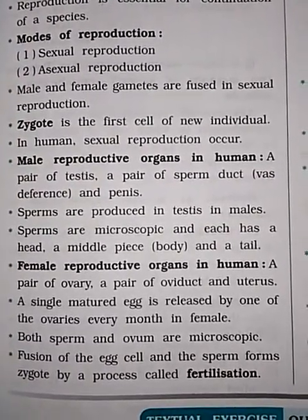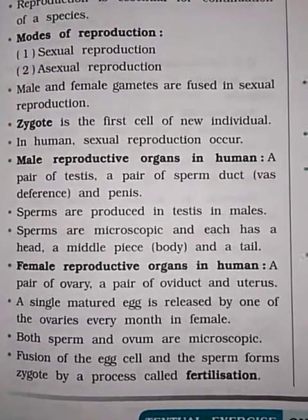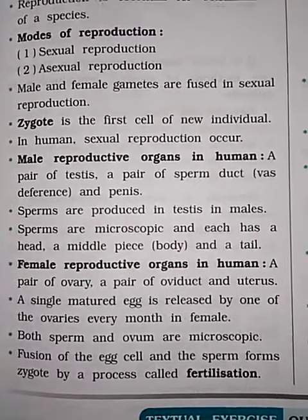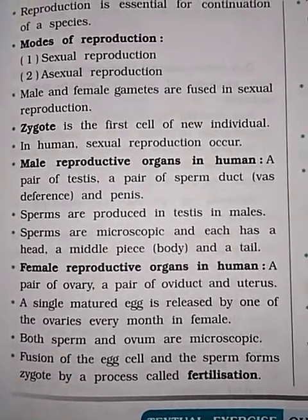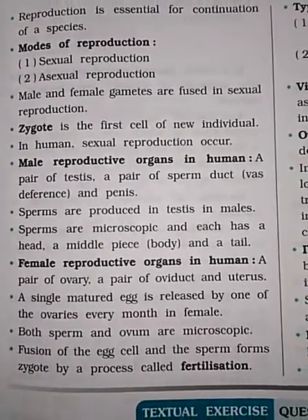Sperms, as you can see, have a head, middle piece body, and a tail.